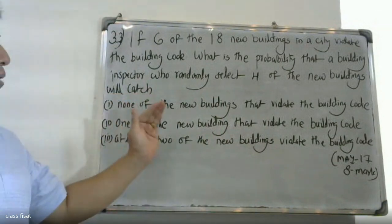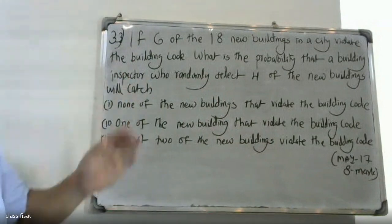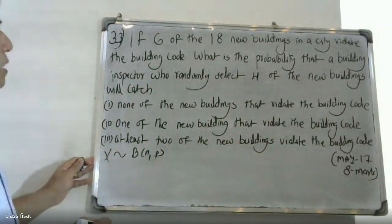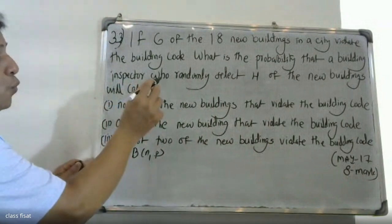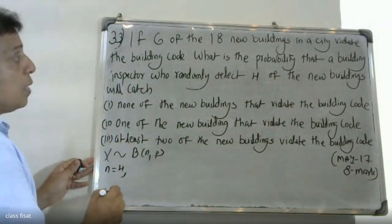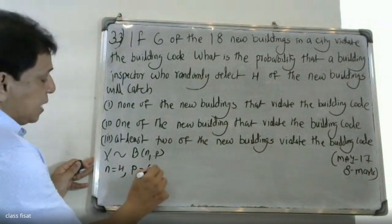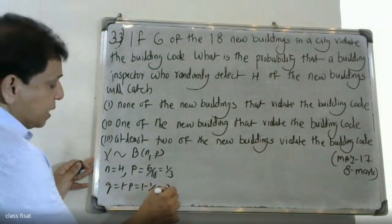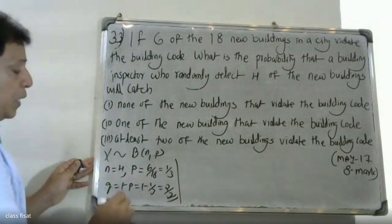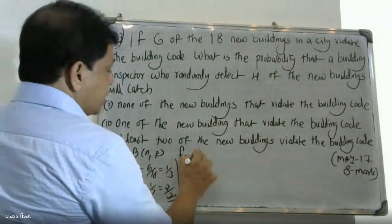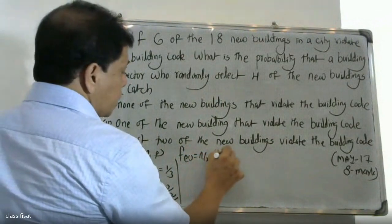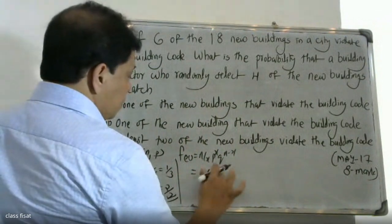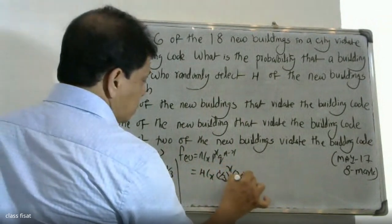This problem follows a binomial distribution. The probability p is 6 divided by 18, which equals 1/3. Therefore q equals 1 minus p, that is 1 minus 1/3, which equals 2/3. The binomial distribution formula is f(x) = nCx times p raised to x times q raised to n minus x, so f(x) = 4Cx times (1/3) raised to x times (2/3) raised to (4 minus x).